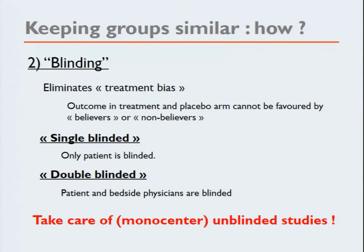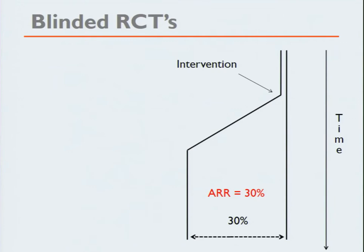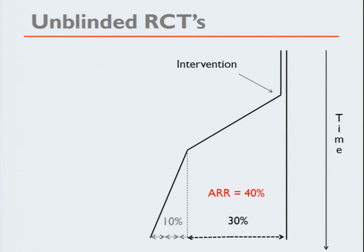Then there is blinding. Take care with monocenter unblinded studies, because at that moment you will have a center effect. In blinded studies this is the ideal; in unblinded interventional studies, you can really believe in your results and will work harder in the group allocated to the study arm.